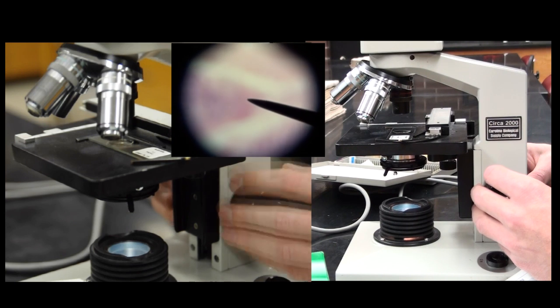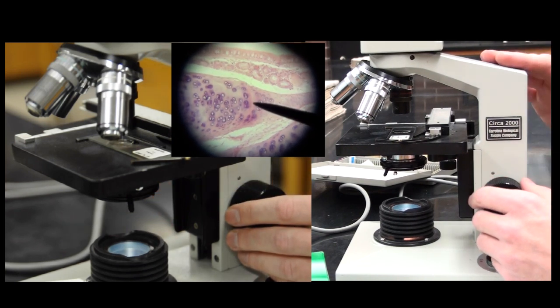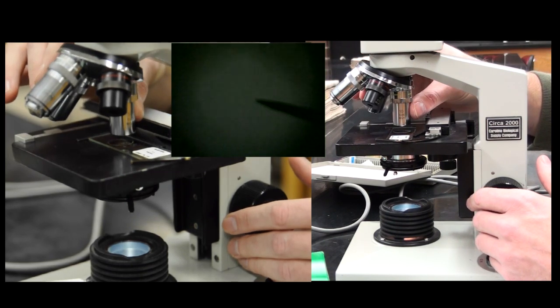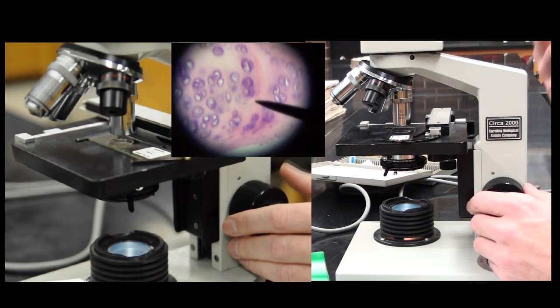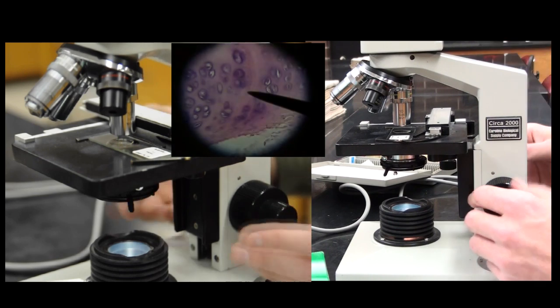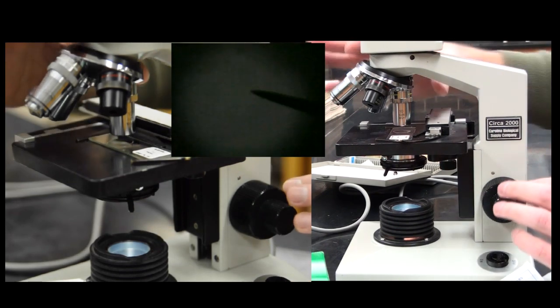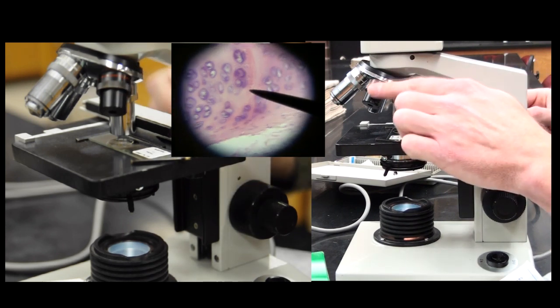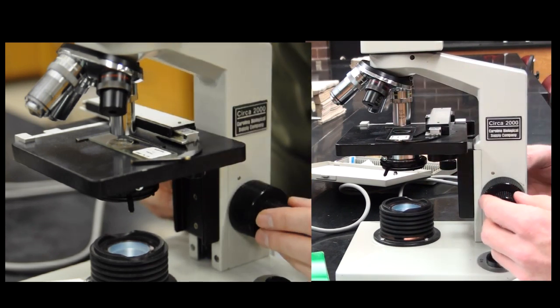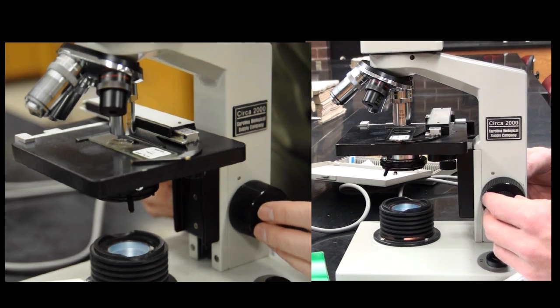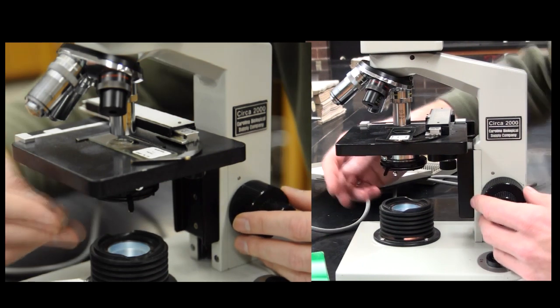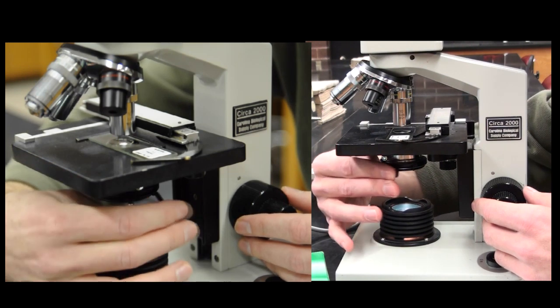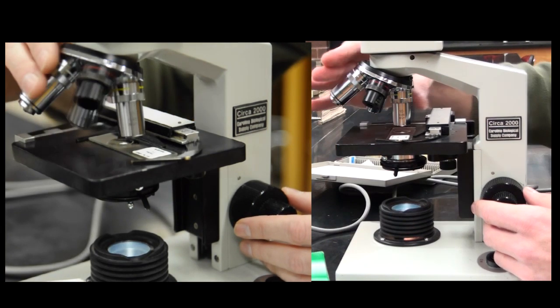Once I'm in focus, most of these microscopes are what I call parafocal. As I move from one lens to the other, it should maintain its focus. There are going to be times where it goes off a little bit, but once I start moving to higher objective lenses, as long as I focus under a lower objective lens first, I can use my fine focus knob and focus my specimens. Based on how well I see it, I may want to adjust the amount of light as I go through.